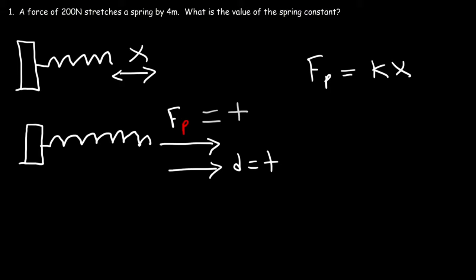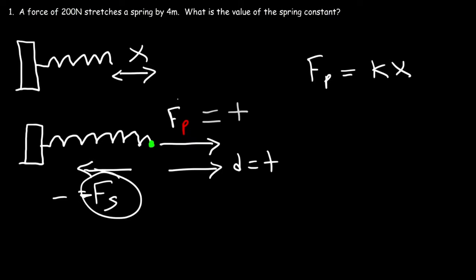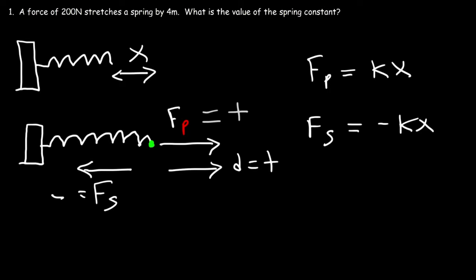As you stretch the spring to this point and apply a force Fp, if you don't increase the force, it's not going to stretch further. So right now it's in equilibrium, which means there's another force pulling the spring back to its original length. That force is known as the restoring force, which you can call Fs or Fr, and the restoring force is in the negative x direction. These two forces are equal in magnitude but opposite in direction. Once you let go, Fs takes over and causes the spring to snap back to its original length. So because Fs is negative, the restoring force is negative kx.